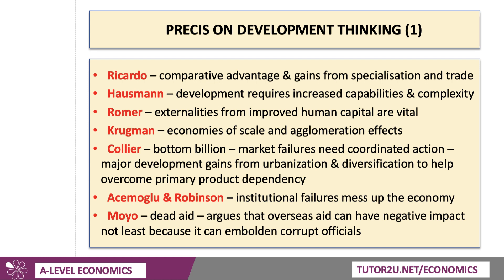Daron Acemoglu and James Robinson wrote a famous, influential book called Why Nations Fail. They argued that fundamentally the failure to achieve development goals was down to government failure and institutional failures, including high levels of corruption, poorly functioning civil service, and basically shallow institutions. So weaknesses in terms of the courts upholding the rule of law, the ability of powerful elites to extract rent from their investments, and that money not finding its way into taxation and public services. Essentially, Acemoglu and Robinson are all about institutional failure — or government failure, as you may have covered in your first year economics.